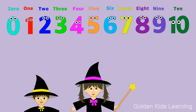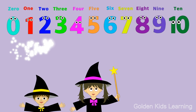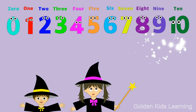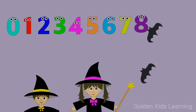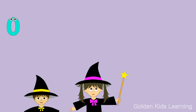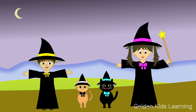We start with our smallest number, 0, and go up one by one until we get to our biggest number, 10. Those silly bats messed up our numbers. Let's put them in order again.